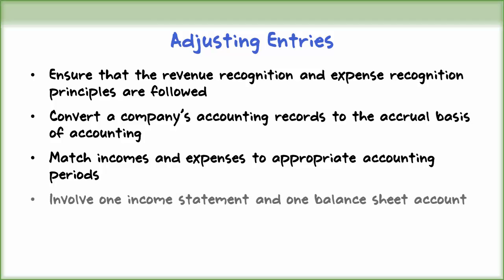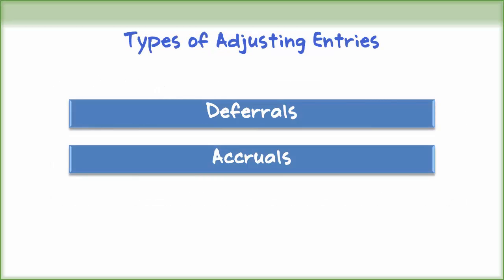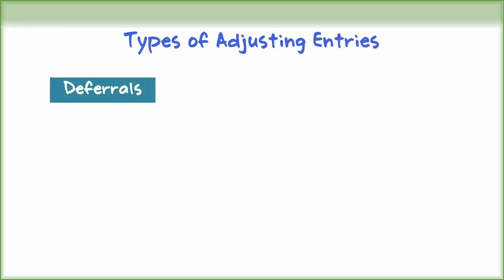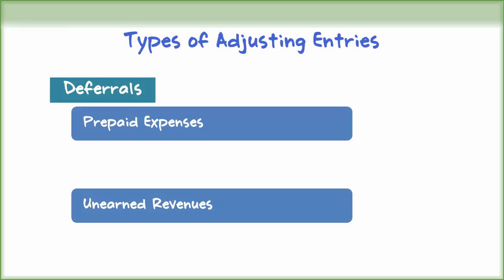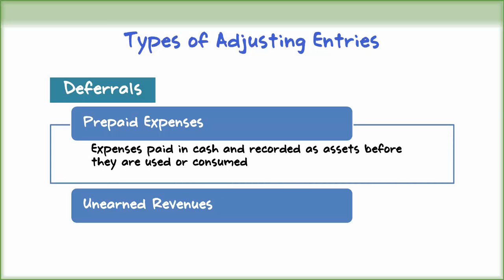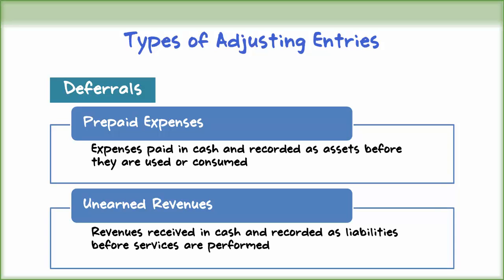Every adjusting entry will involve one income statement account and one balance sheet account. An adjusting entry is needed in cases of deferrals and accruals. Deferrals are further classified into prepaid expenses and unearned revenues. Prepaid expenses are expenses paid in cash and recorded as assets before they are used or consumed. Unearned revenues are revenues received in cash and recorded as liabilities before services are performed.